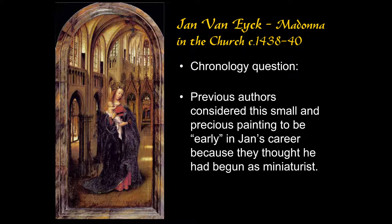They had this idea that Jan van Eyck may have started as a miniaturist. There is a manuscript called the Milan Turin Hours — divided between libraries in both cities — which they thought Jan van Eyck had painted, with some also attributing parts to his brother Hubert van Eyck. Today, many more art historians think the Milan Turin Hours are so close to Jan's style because someone was imitating it, and it's possible they may be copies of lost Jan van Eyck paintings.